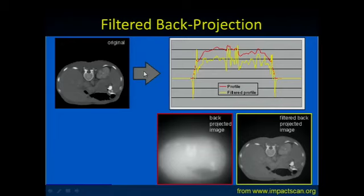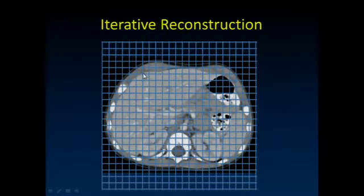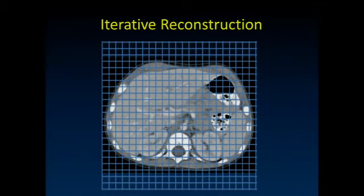We're moving more and more to iterative reconstruction techniques away from filtered back projection. The main reason is we can model the image formation process better and handle noise better. Why didn't we do this before? Because it's computationally an extremely complex problem—it takes a tremendous amount of computing power. The theoretical mathematics behind it aren't as complex as for filtered back projection, but the computational power required is much greater.